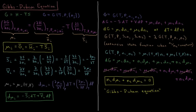Similarly, the Gibbs energy is a function of temperature, pressure, and the number of moles of substance 1 and substance 2 for a binary or two-component mixture. So the differential of the Gibbs energy, dG during some small change in our system, equals −S dT plus V dP plus μ₁ dN₁ plus μ₂ dN₂. Each of these terms is the partial derivative of the Gibbs energy with respect to each individual variable. At constant temperature and pressure, dG equals μ₁ dN₁ plus μ₂ dN₂.